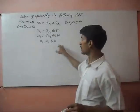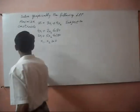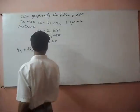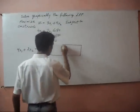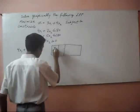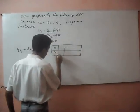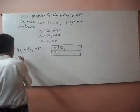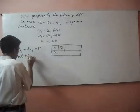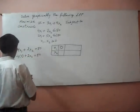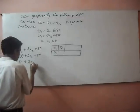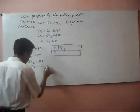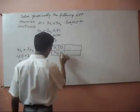First of all, we draw these conditions on graph paper. For the first equation, 4x1 + 2x2 = 80, we make a table for x1 and x2. If x1 = 0, we put this value in: 0 + 2x2 = 80, so 2x2 = 80, and x2 = 80 ÷ 2 = 40.